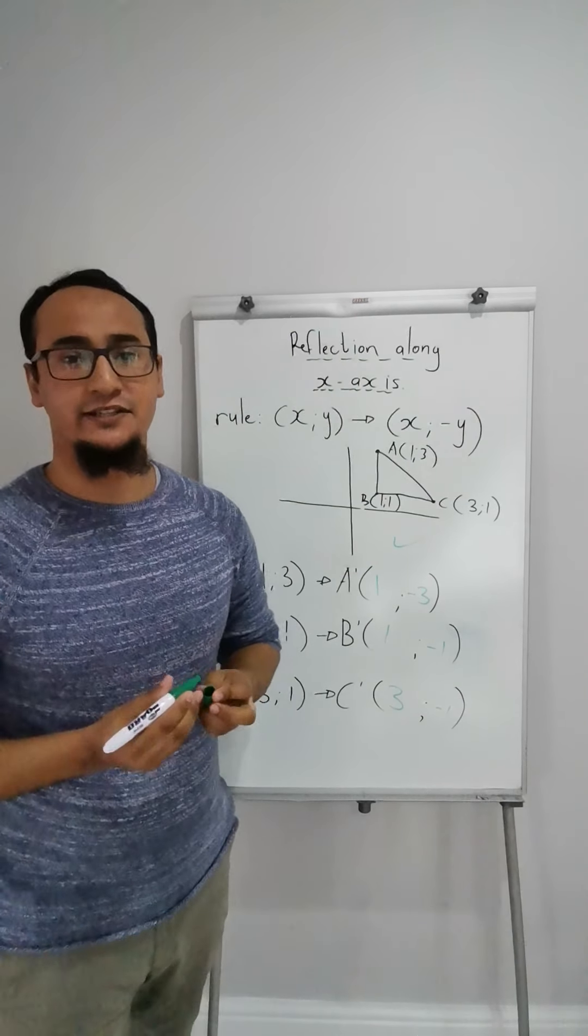Okay, reflection along the x-axis. So what's going to happen? My diagram is going to go over or reflect over my x-axis and my diagram will be more or less over there.